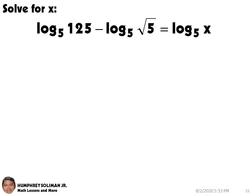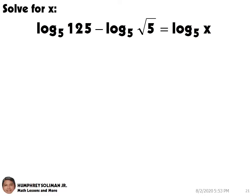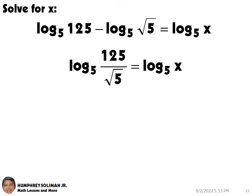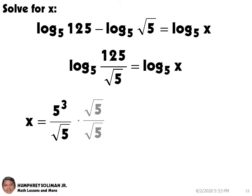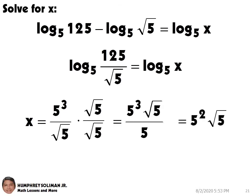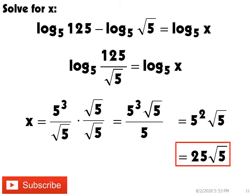Let's try another example. We have log base 5 of 125, minus log base 5 of square root of 5, equals log base 5 of x. We can write the left side as a single logarithm. And then, x will be equal to 5 cubed over the square root of 5. And, we need to rationalize the denominator. This will give us 5 squared times the square root of 5, and this is equal to 25 times the square root of 5.